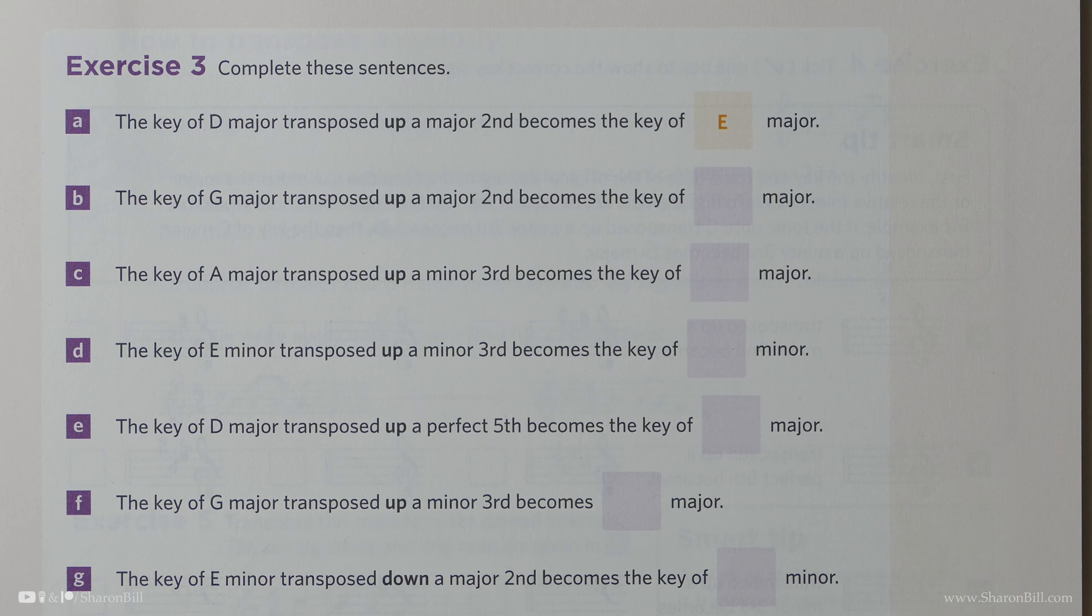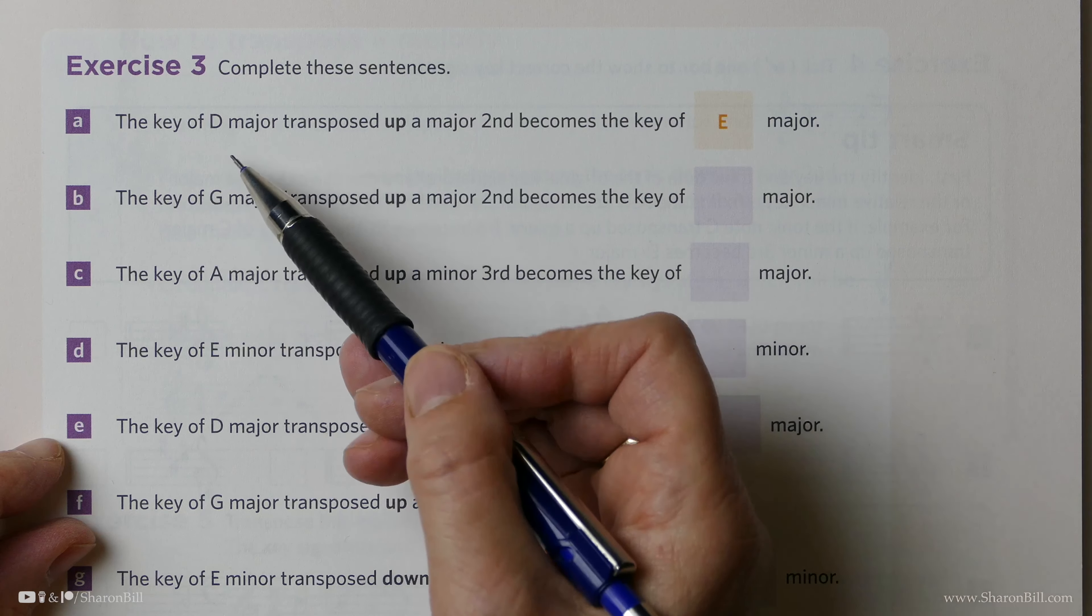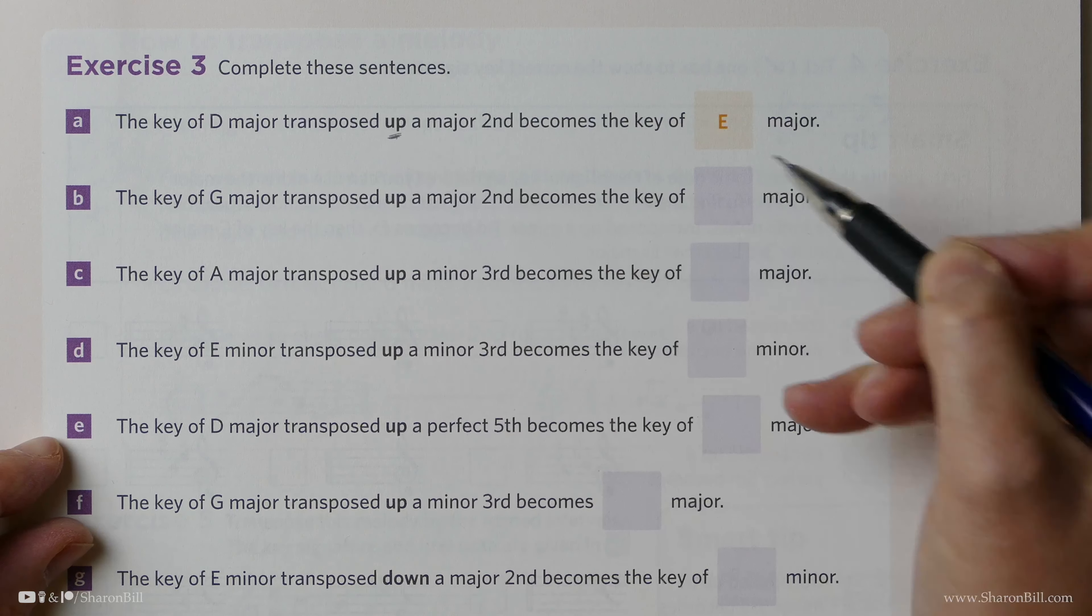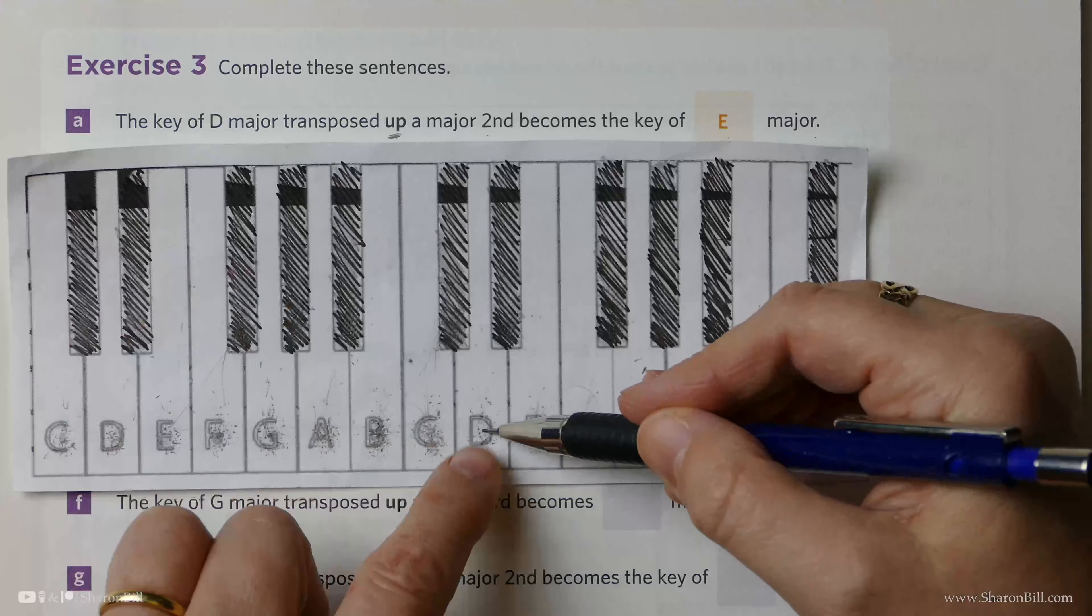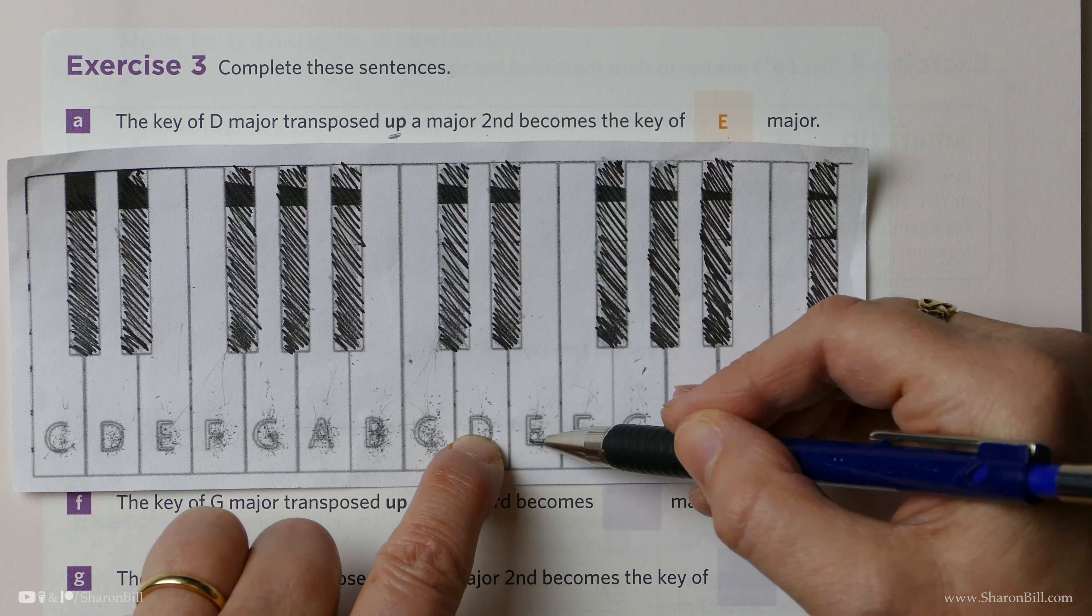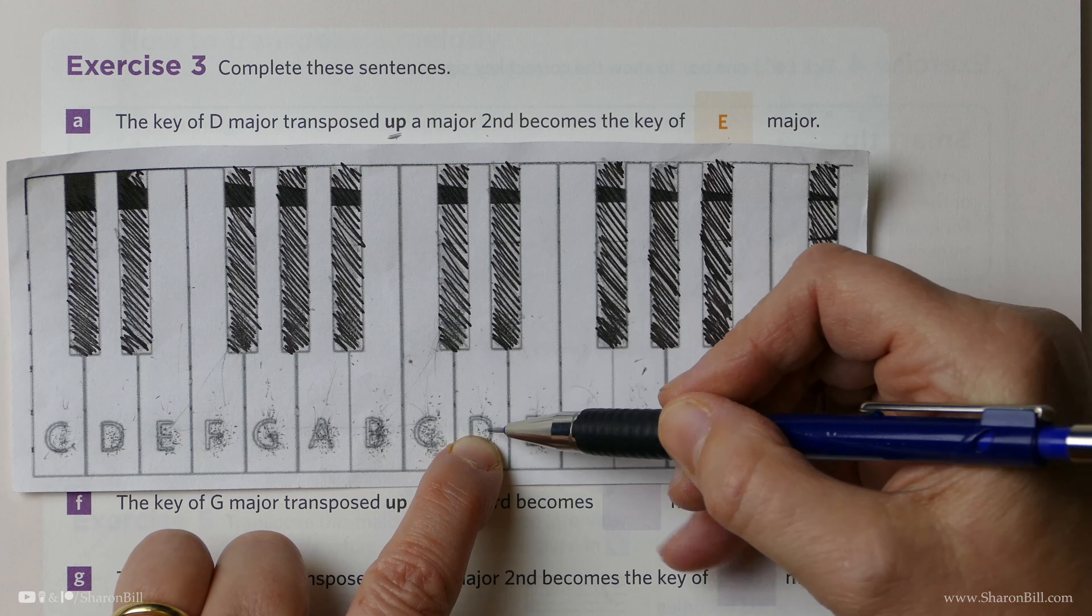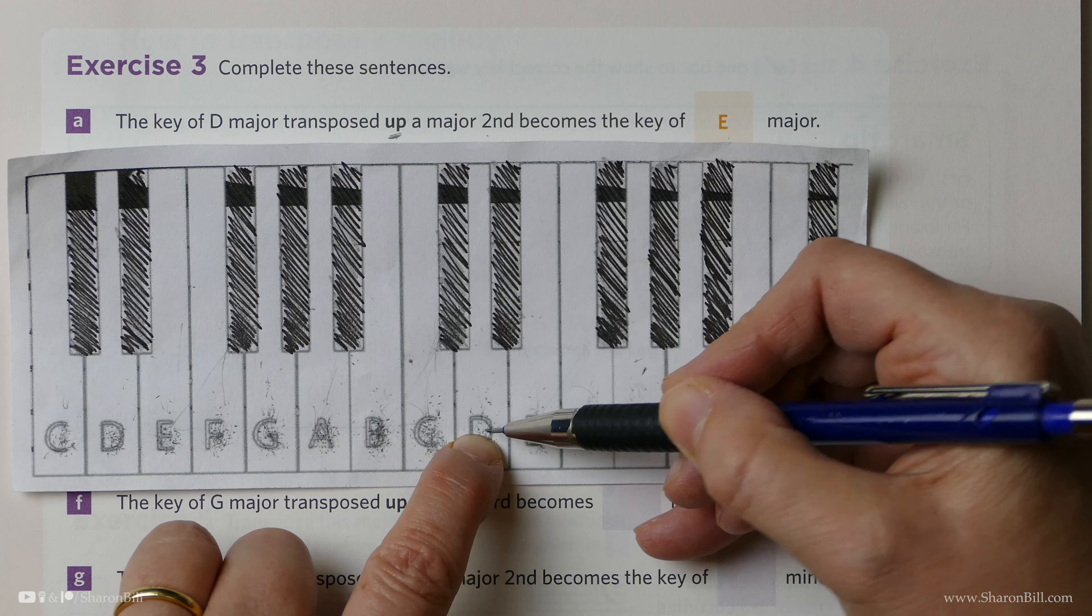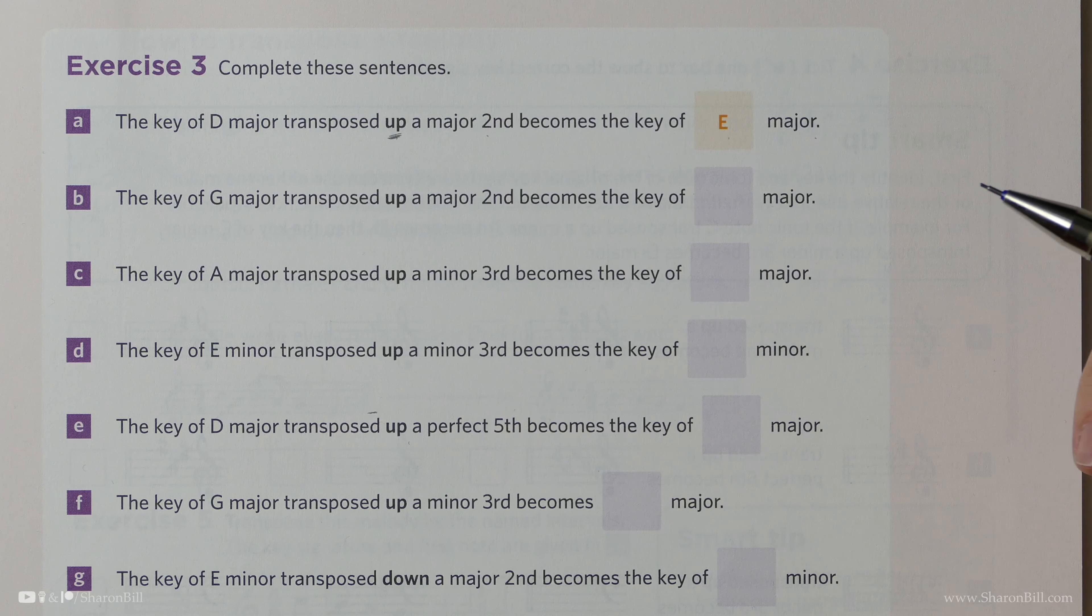Continuing with the topic of transposition, we move on to page 19 of the Discovering Music Theory workbook, looking at exercise 3. We now have some questions to answer about transposing to various keys. We're given the first example here, and we're told that the key of D major transposed up a major second becomes the key of E major. So we've gone from major to major key, up a major second, and we can see that D to E is a full tone, that's a major second, like a full step. So playing in the key of D major, you will be playing with a key signature of 2 sharps, and then when you transpose up, you're now going to be playing in a key signature of 4 sharps.